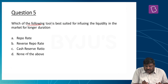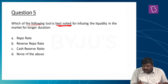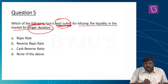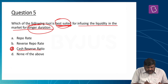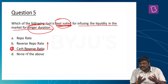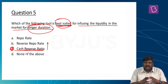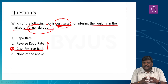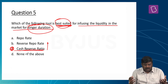Question five: Which tool is best suited for infusing liquidity in the market for a longer duration? The answer is cash reserve ratio — CRR. RBI uses CRR to infuse liquidity for a longer duration, which is precisely why RBI does not change CRR very often in monetary policy — once changed, the liquidity effect lasts a very long time. The right option is option C.